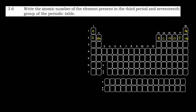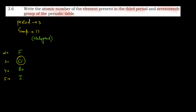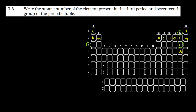So fluorine is present in the second period. Fluorine is just below — wait, chlorine is below fluorine, then bromine, then iodine. So the element in the third period and 17th group is chlorine. To find the atomic number of chlorine: fluorine's atomic number is 9, and we add 8 to it, so 9 plus 8 equals 17.